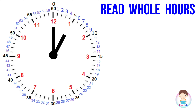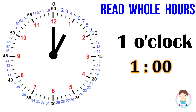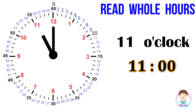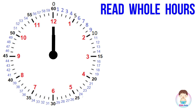In this clock, the hour hand points at 1 and the minute hand points at 12, so it is exactly 1 o'clock. Here, the hour hand points at 11 and the minute hand points at 12, so it is exactly 11 o'clock. Here, the hour hand points at 12 and the minute hand points at 12, so it is exactly 12 o'clock.